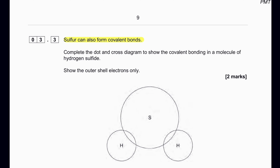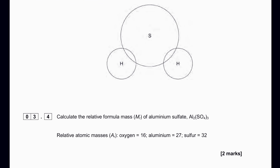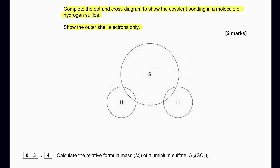Sulfur can also form covalent compounds. Complete the dot and cross diagram to show the covalent bonding in a molecule of hydrogen sulfide, showing outer shell electrons only. Sulfur has six electrons in the outer shell. Representing sulfur as dots and hydrogen as crosses: two crosses from hydrogen and two dots from sulfur form the shared pairs, with sulfur having a total of six electrons in the outer shell.